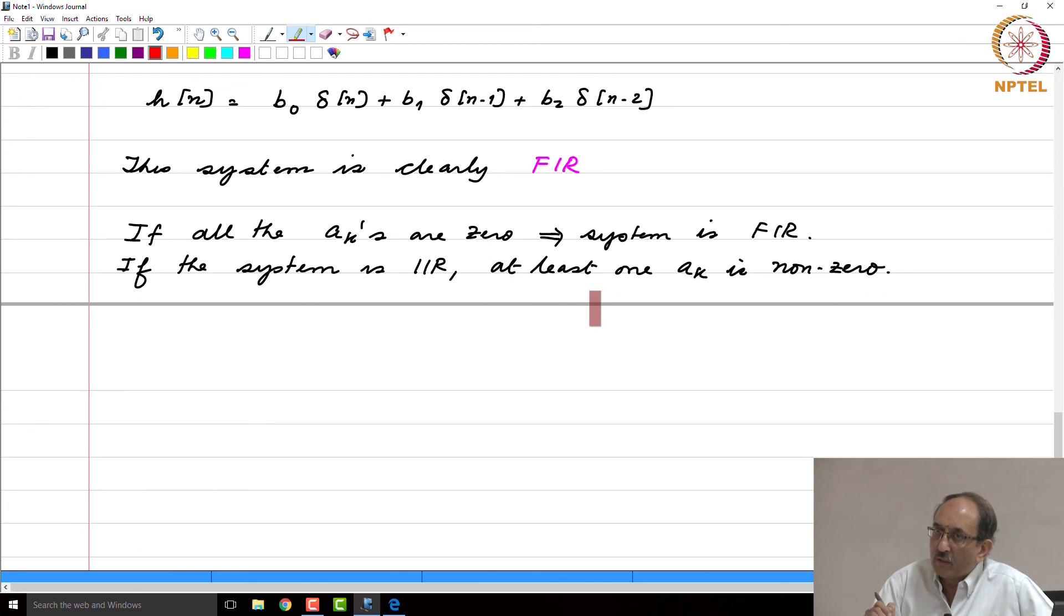A implies B, the contrapositive is not B implies not A. Therefore, at least one aₖ is non-zero, the converse of that is all aₖ's are 0. Not B implies not A - not A is IIR becomes FIR. These two statements are, one is the contrapositive of the other. But what we want to ask is, if at least one aₖ is non-zero, does it mean the system is IIR?